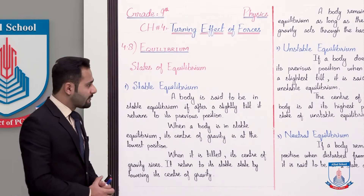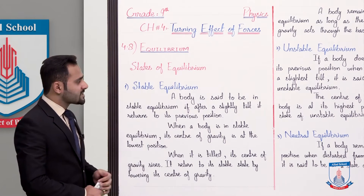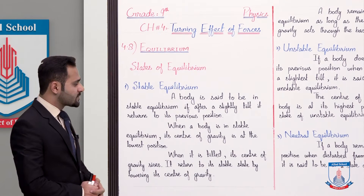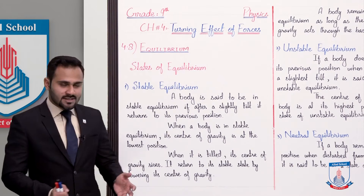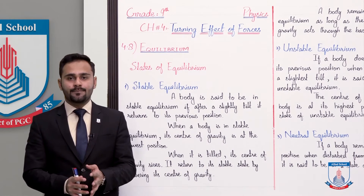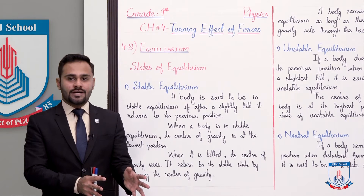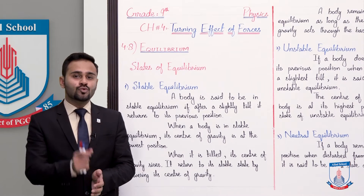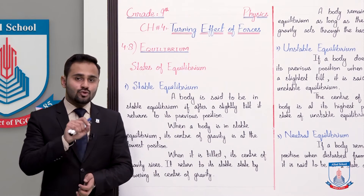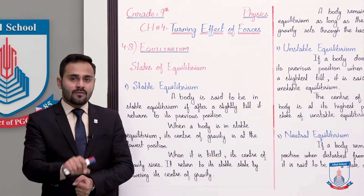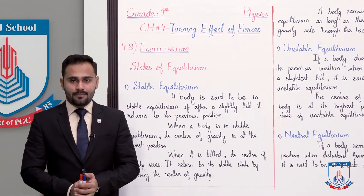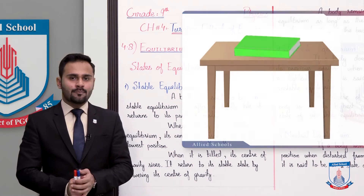First of all, stable equilibrium. A body is said to be in stable equilibrium if, after a slight tilt, it returns to its previous position. That is stable equilibrium — agar aap usko slightly tilt karein aur jaise hi aap usko chhodein, to woh dubara se apni usi position par aa jaaye. Like for example, a book placed on a table.